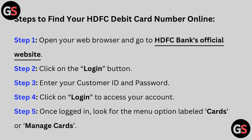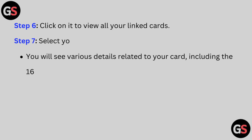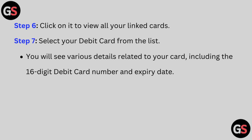Step 5: Once logged in, look for the menu option labeled Cards or Manage Cards. Step 6: Click on it to view all your linked cards. Step 7: Select your debit card from the list. You will see various details related to your card, including the 16-digit debit card number and expiry date.